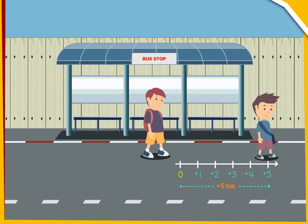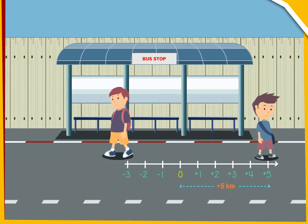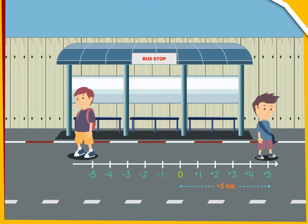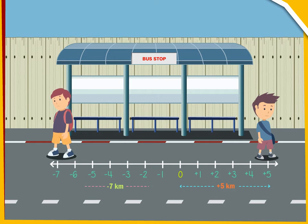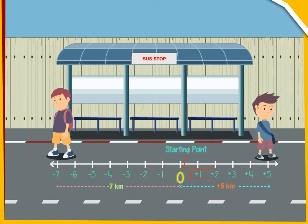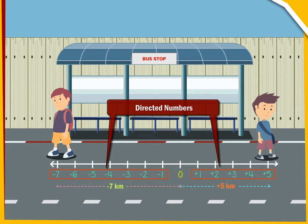Samarth walks 7 kilometers towards the west direction from the bus stand. We can write it as minus 7 kilometers. Here, from a starting point, when a number shows a positive or negative direction by a plus or minus sign, we call such numbers as Directed Numbers because they show a direction.